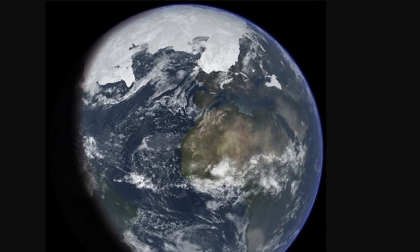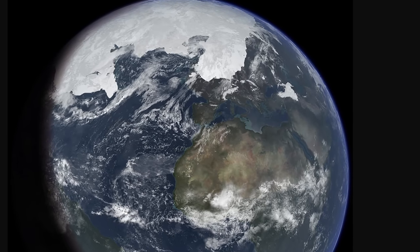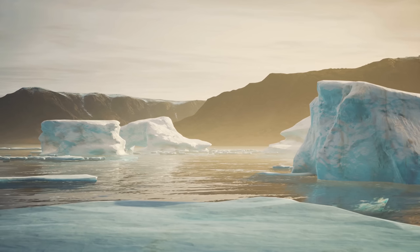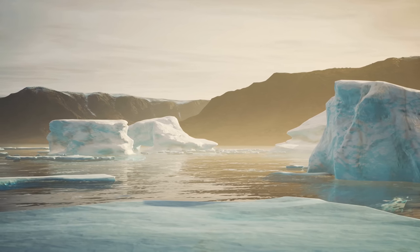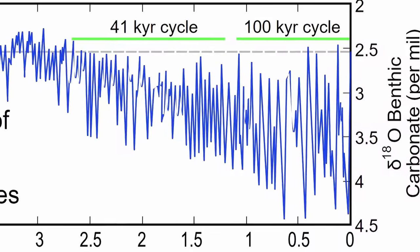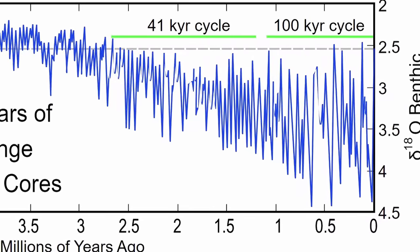You might have heard of the term Quaternary period — essentially the period representing what we sometimes refer to as the ice age. It started about 2.6 million years ago and is characterized by occasional glaciation on the planet, where the ice caps extend and sea levels drop dramatically, all following a cycle most likely resulting from orbital changes.